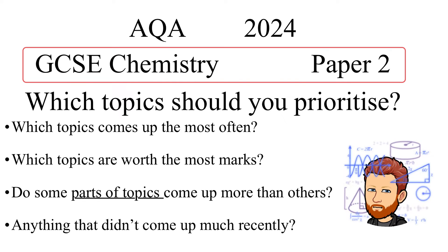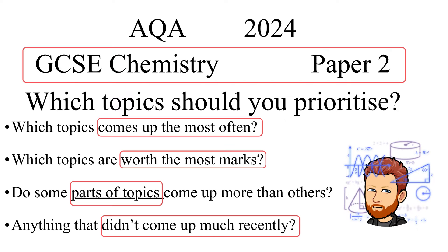I've done an in-depth analysis of all six papers there have been for this course and as a result I'm going to help you answer the following questions: which topics come up the most often and which are worth the most marks? Are there some subtopics that are worth more than others? And is there anything that didn't come up much on recent exams that we could anticipate coming up with greater emphasis in 2024?